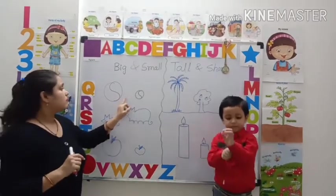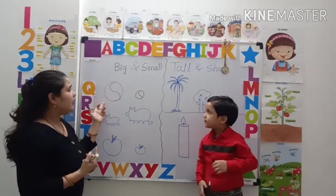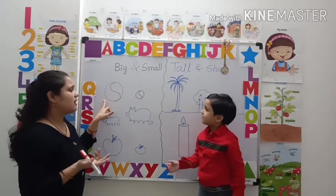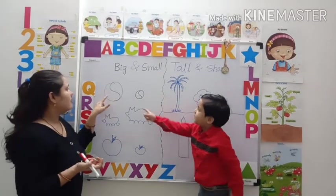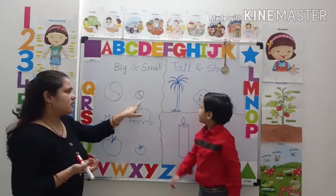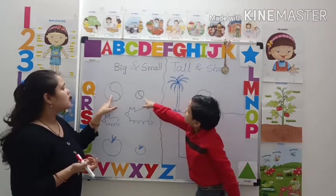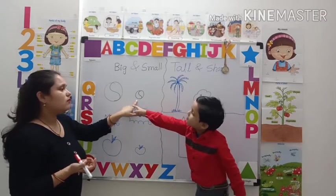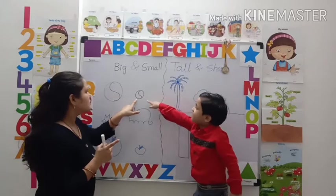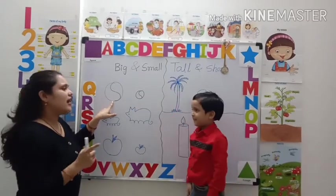Now, please tell me which one is big? Which wall is big? This? Is this? Is this? This is small and this is big. Please louder, I can't hear you. This is small and this is big. Very good.